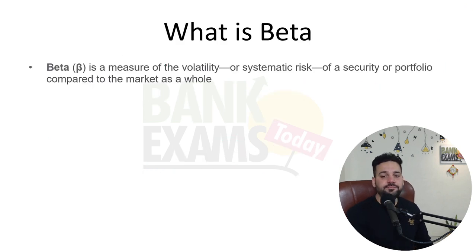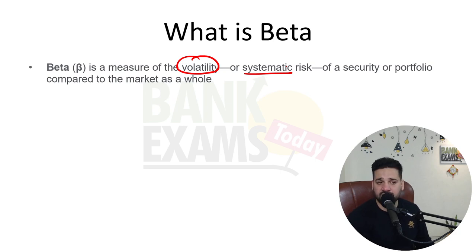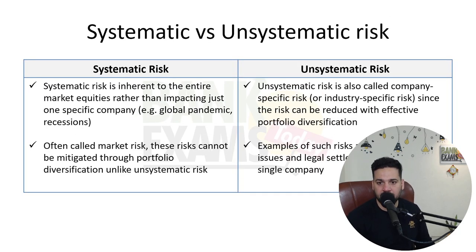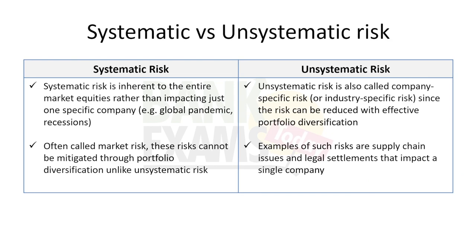First of all, what is beta? Beta is a measure of volatility or systematic risk. So what is systematic risk? Let's do the difference between systematic and unsystematic risk before digging deep into the topic. Systematic risk is inherent to the entire market — it's the risk on the entire economy. For example, the risk due to COVID: overall demand declined during COVID, which impacted the whole economy and all industries, except healthcare and pharma. That was systematic risk, also known as market risk.